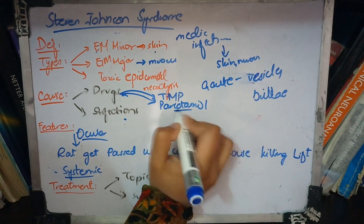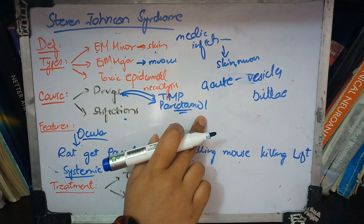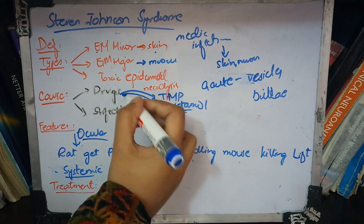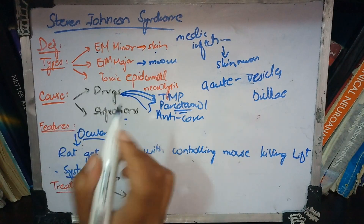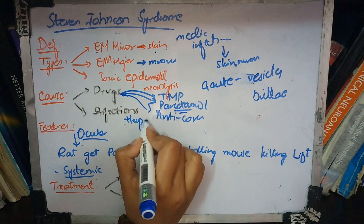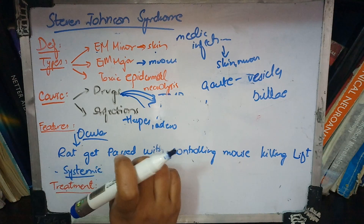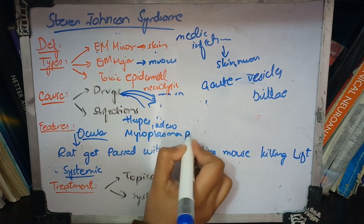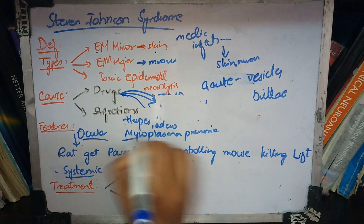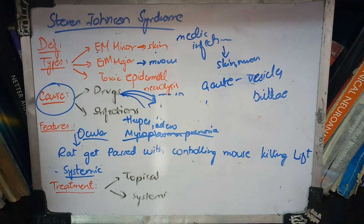Paracetamol can also cause it, especially in MCQ scenarios. For infection causes, the main organism is Mycoplasma, which is a wall-less organism. Streptococcus can also be a cause, but Mycoplasma is the most important causative agent. So remember: drugs and infections as the two main causes.